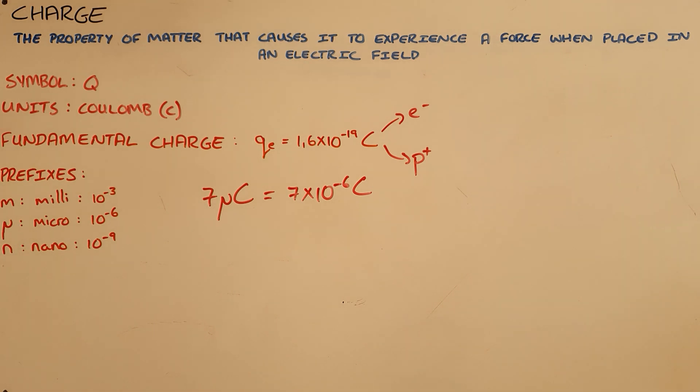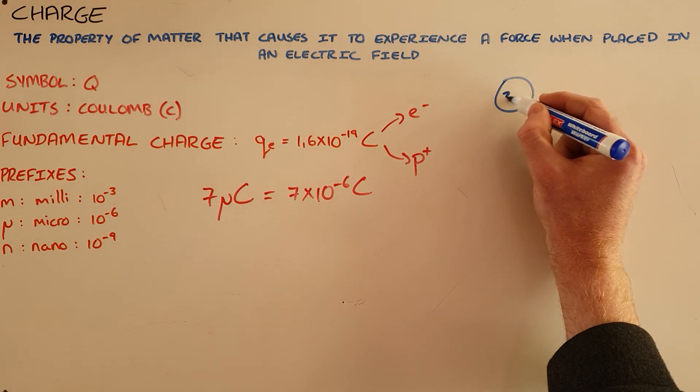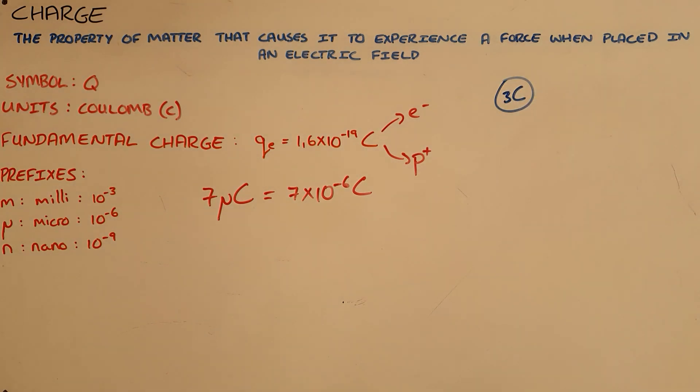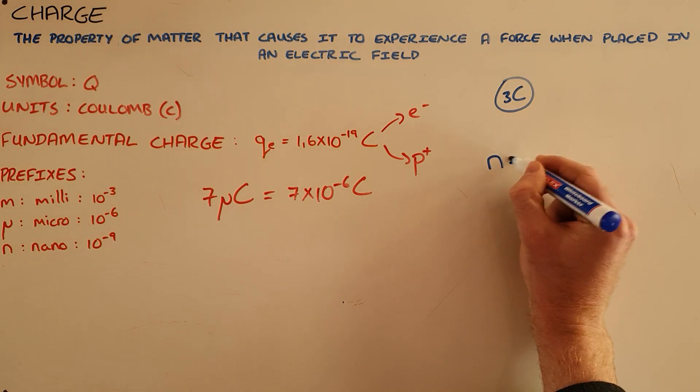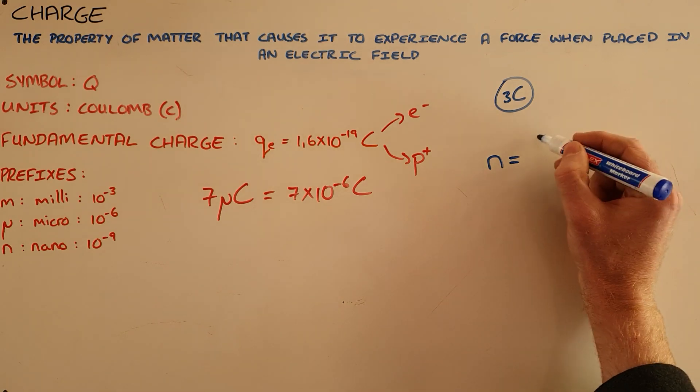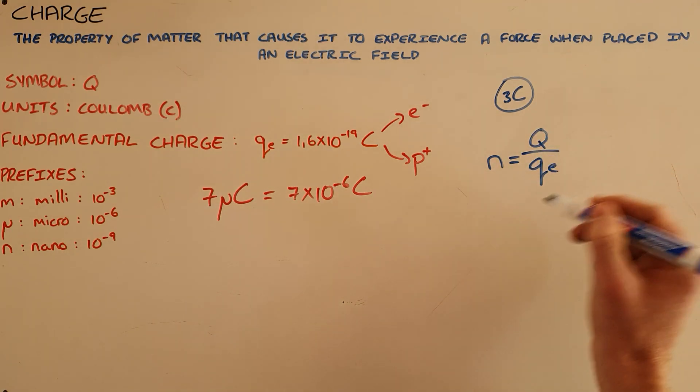Now it is possible for us to determine the number of fundamental charges that make up an amount of charge. So if we have an object that has a charge of 3 coulombs, we can be asked to determine how many fundamental charges that contains. We would say that the number of fundamental charges is equal to the total charge divided by the fundamental charge.